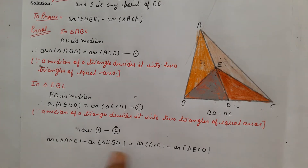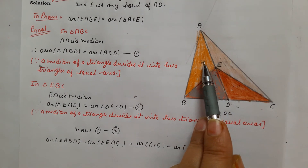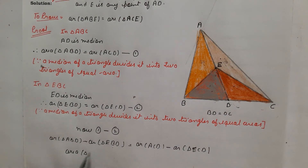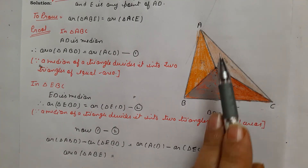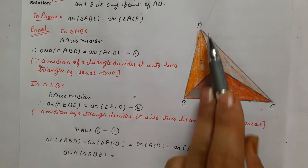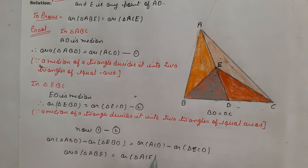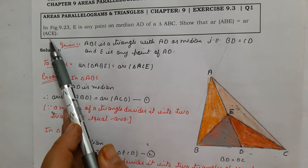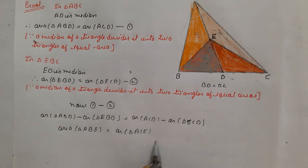ABD minus EBD gives us triangle ABE, so area of triangle ABE equals ACD minus ECD, which gives area of triangle ACE. Therefore area of triangle ABE equals area of triangle ACE — hence proved.